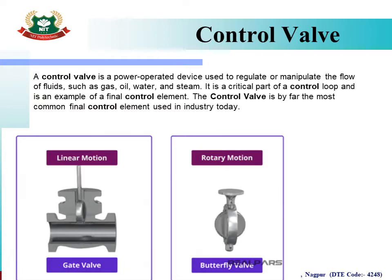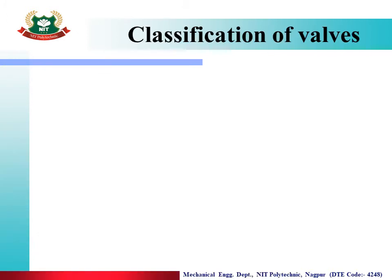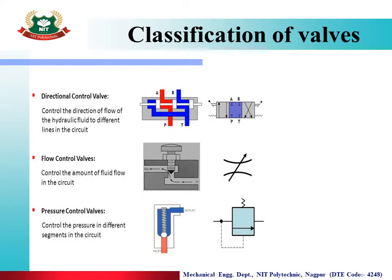In industrial control valve systems, the regulation and manipulation of fluid flow is achieved using control valves. Control valves are classified into three types: Directional Control Valve (DCV), Flow Control Valve (FCV), and Pressure Control Valve (PCV).